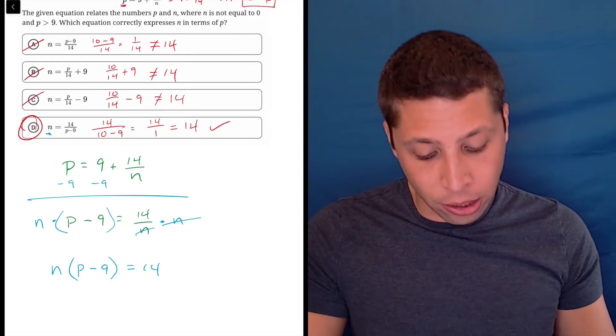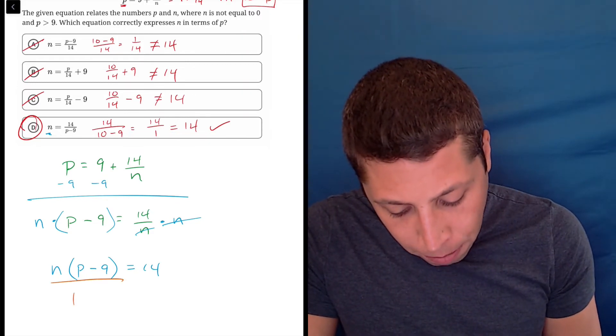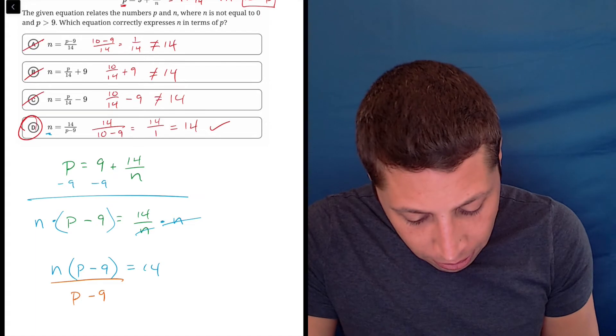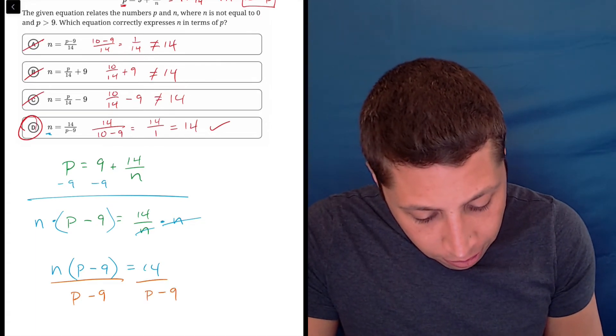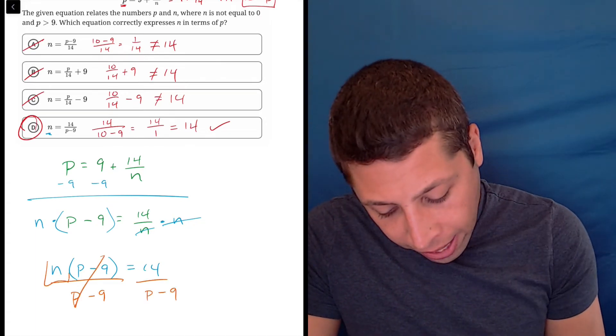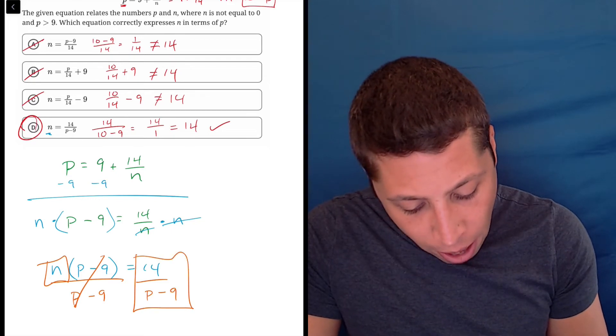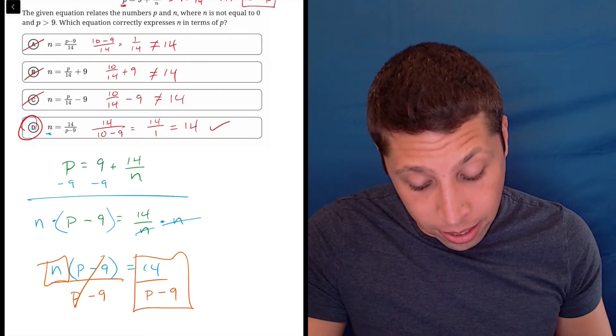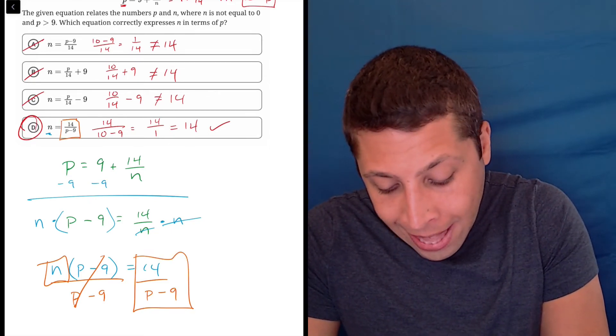If I wanted to get n alone, now I would divide by the quantity p minus 9. That would cross it out and n would be by itself and now 14 over p minus 9 would be the other side. And look, that's what we got.